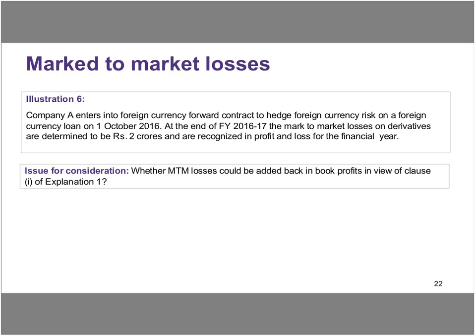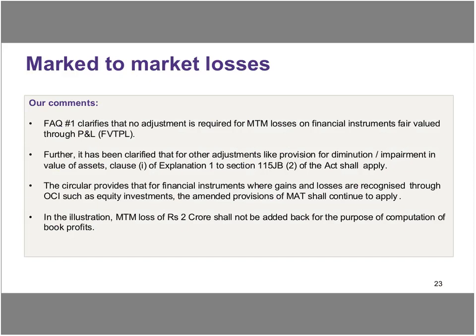If you look at Clause I of the existing provisions, it talks about the amount set aside as provision for diminution in the value of assets. That is where your mark-to-market losses could get caught, and you need to add them back. The clarification provided is that under Ind AS, M2M gains would be taxed, and that is why they are allowing M2M losses. If you were to juxtapose this to the current situation — today you add back all your provision for diminution of assets — but at least in my experience I have not seen too many M2M gains being recognized in the P&L under Indian GAAP. Going forward, since M2M gains would be recognized, this has come in as a corollary to that.